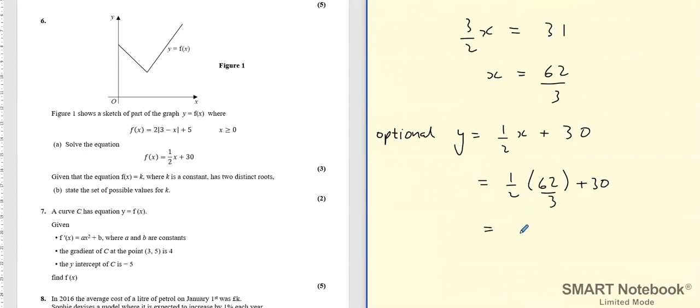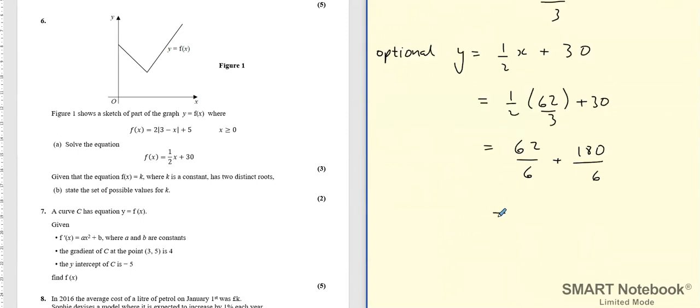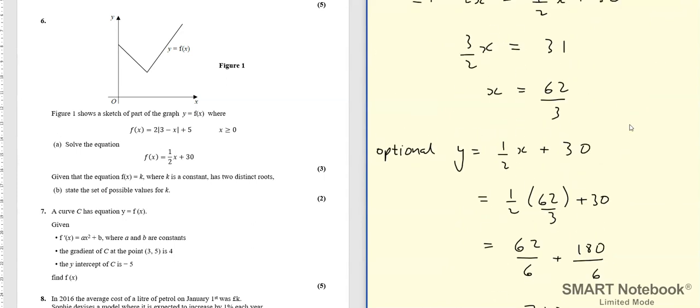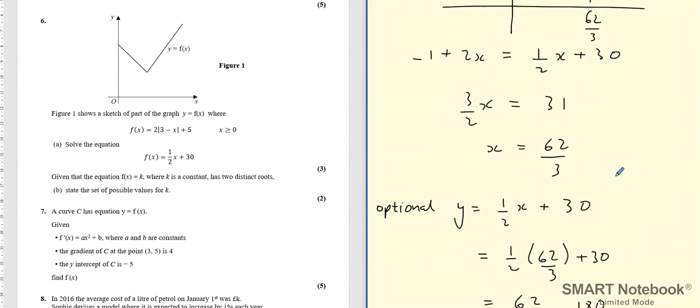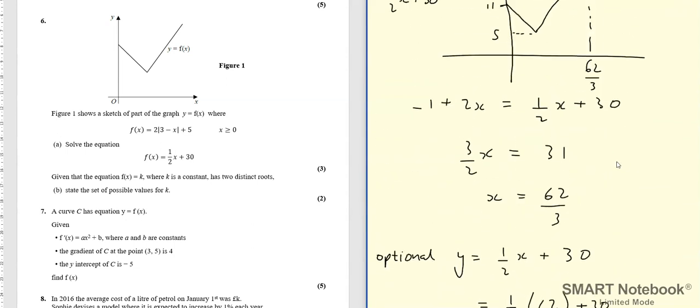So we get 62 over 6 plus 180 over 6, which is 242 over 6. And so the coordinates of where those lines meet, the x coordinate was 62 over 3 and the y coordinate was 242 over 6.